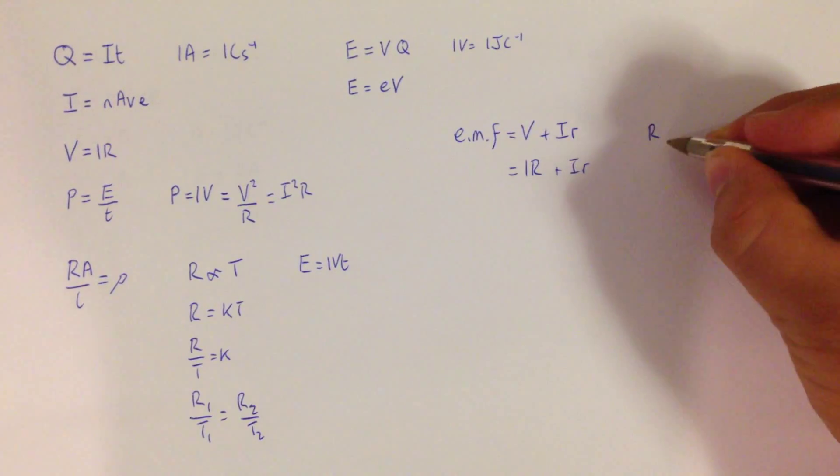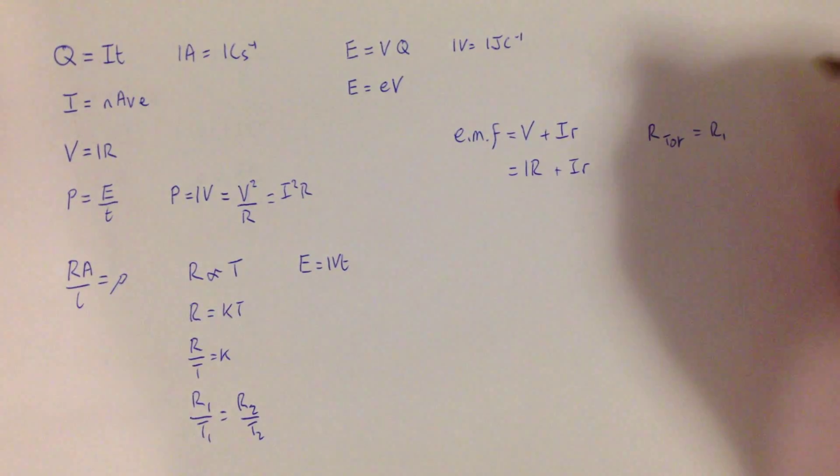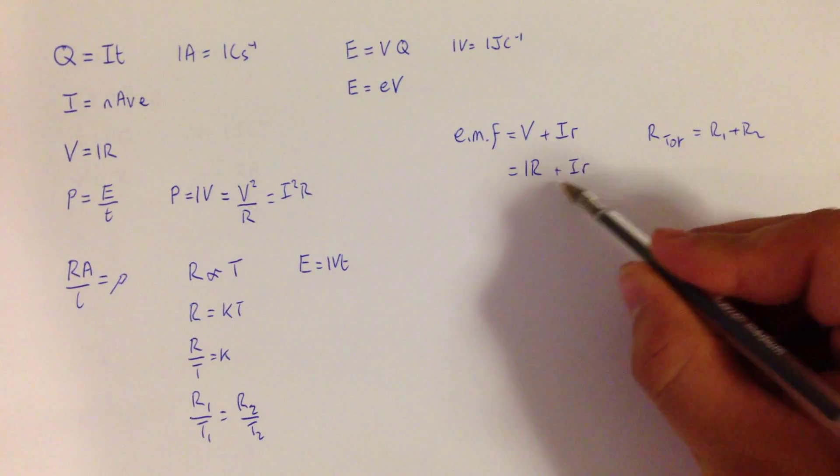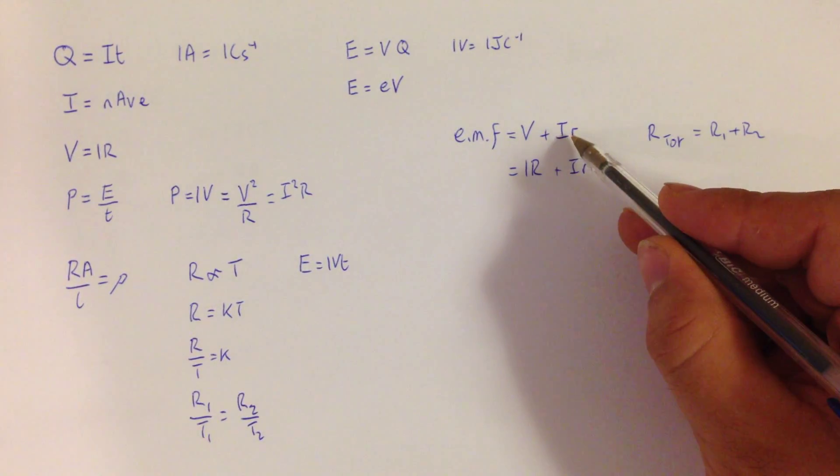So resistors in series are added together as R1 plus R2, and by considering this expression, we end up with this equation.